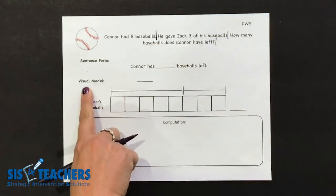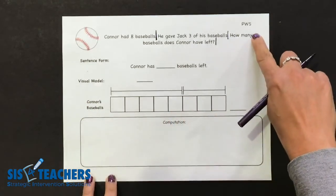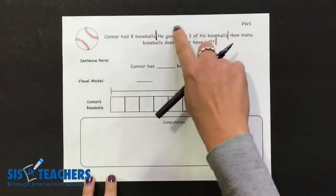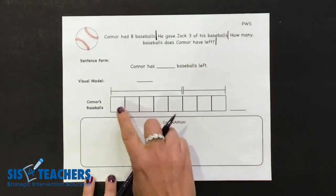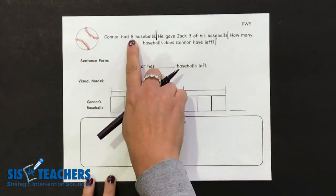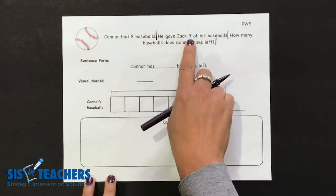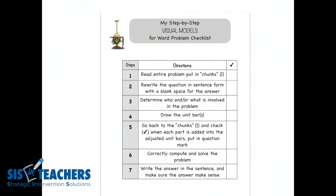The visual model is not necessarily solving the problem, but it's a reading comprehension strategy to transfer this information into a drawing. In first grade this might seem simple, but as the problems get harder — Connor might have 88 baseballs and have given away 32 of them — these can become more complex. So let's go back to our step-by-step checklist and put a check on step one, where we've read the entire problem and put in chunks.